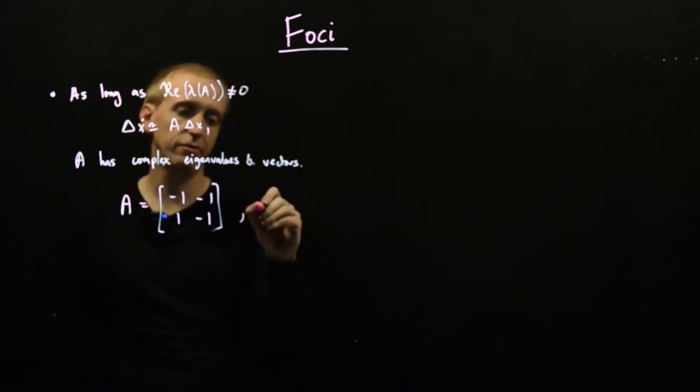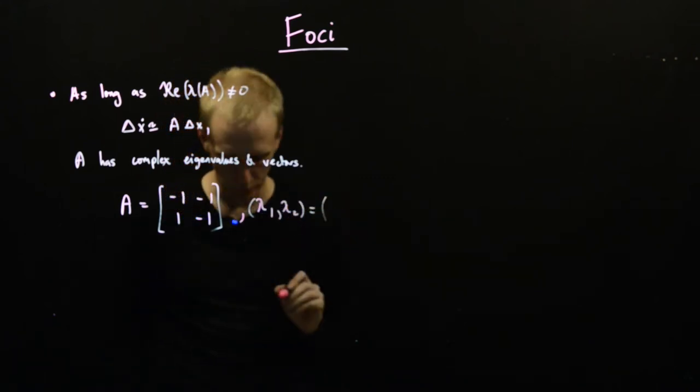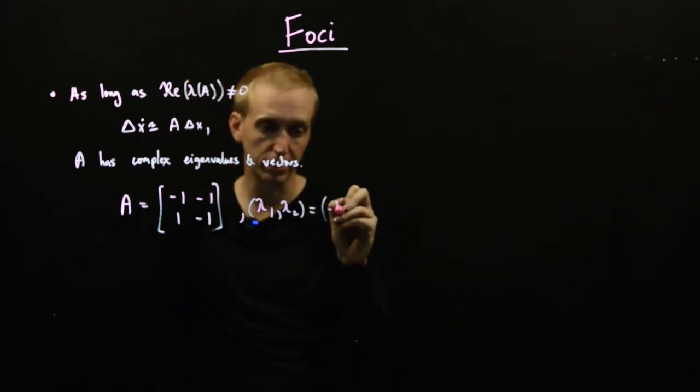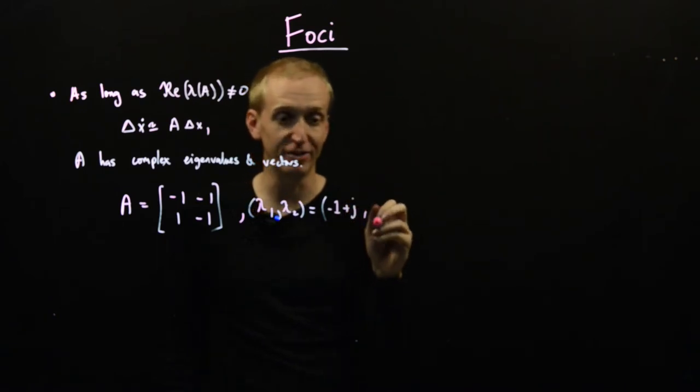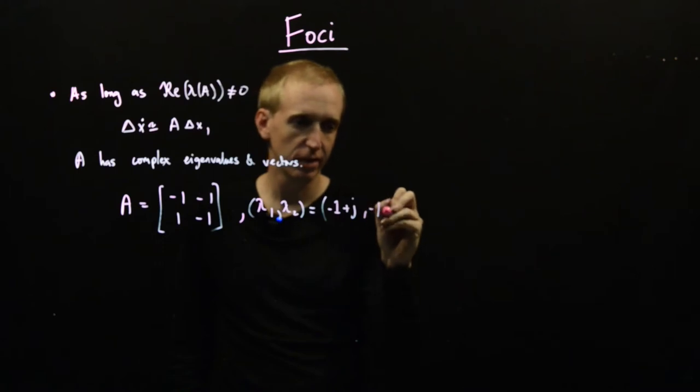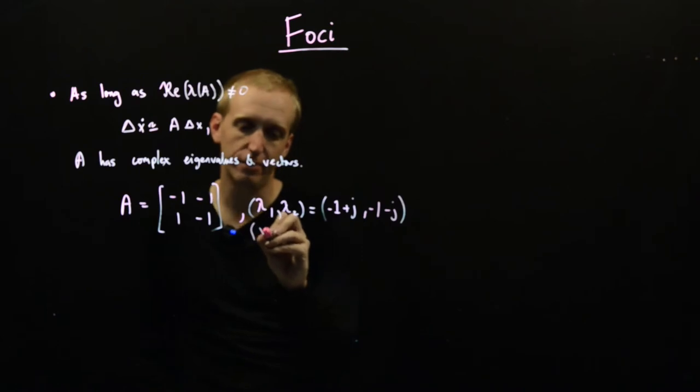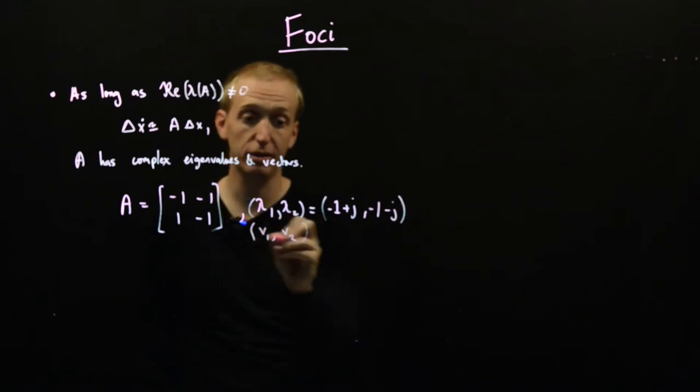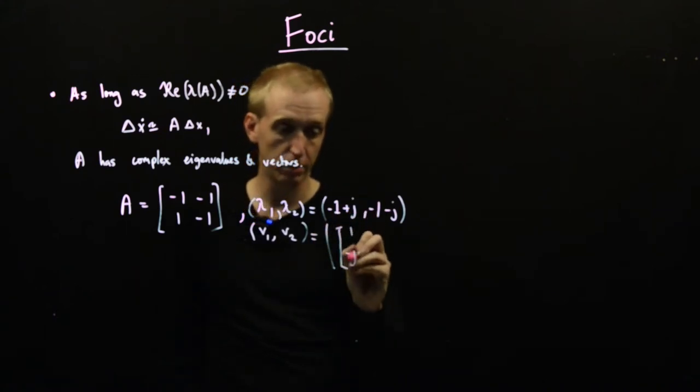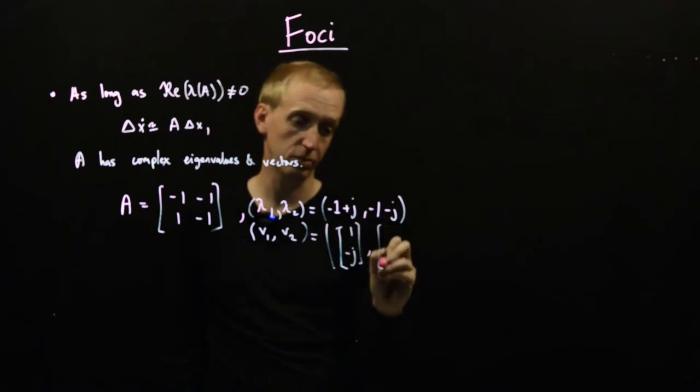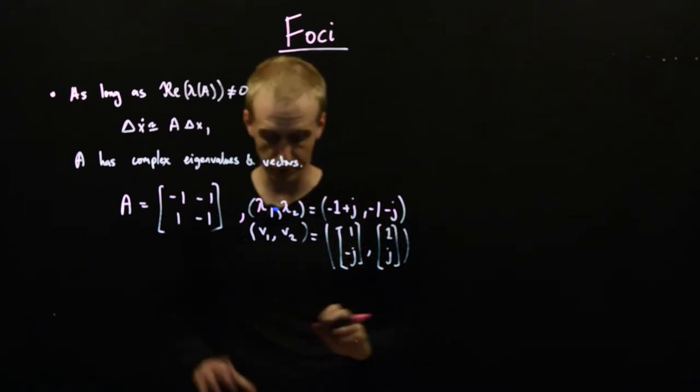Just like before we're going to use our eigenvalue eigenvector method for solving this ODE. In this case, this A matrix has eigenvalues lambda one and lambda two, these are equal to -1 + j and -1 - j. Here we've got our corresponding eigenvectors: with this eigenvalue we have the eigenvector (1, -j), and with this one we have (1, j). You can go away and check these for yourself if you want.